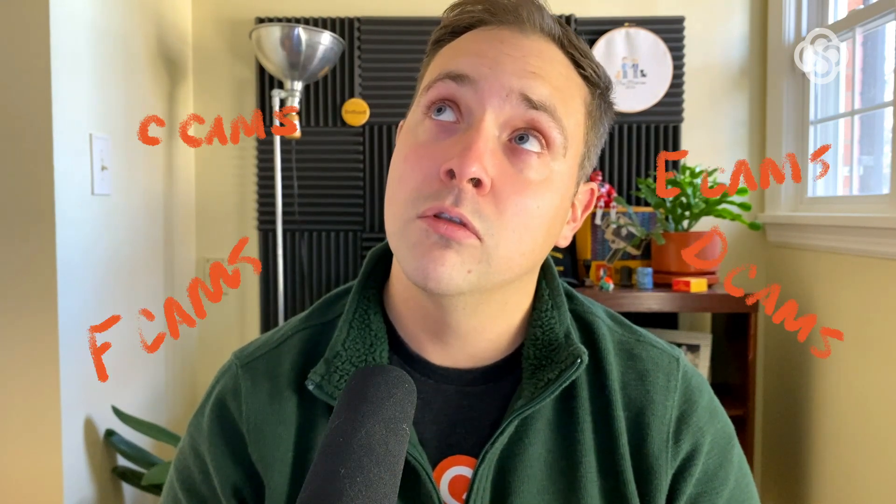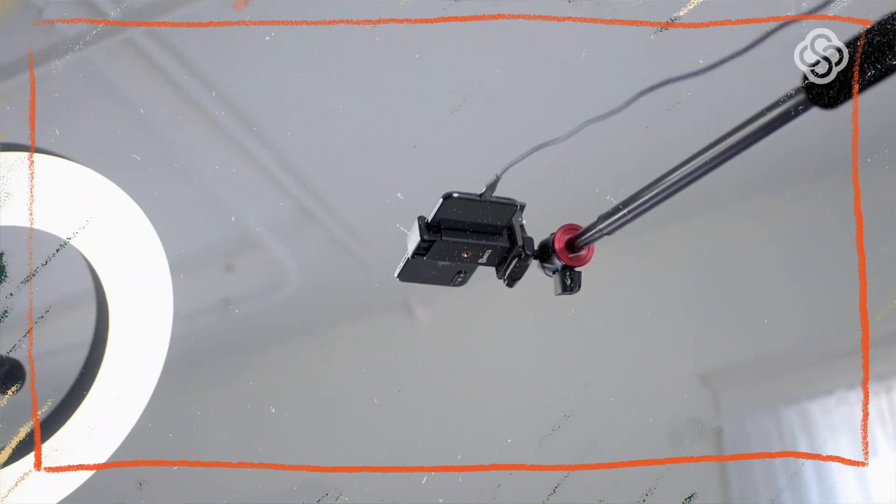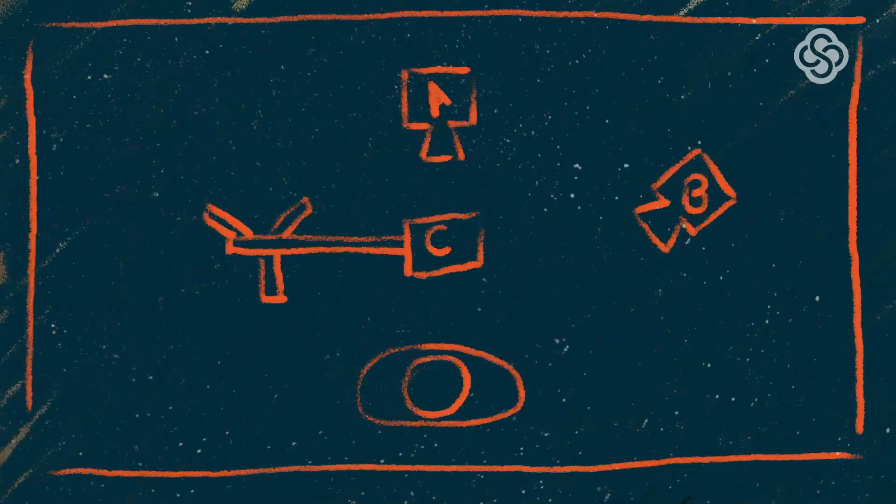So we have A cams, we have B cams — it makes sense that we'd have C cams, D cams, E cams, F cams, G cams — you get it. If I were going to do a live stream of, say, me doing a live illustration or I want to show off something in my hands, I could set up a C cam. Using a stand, I could put it up above me and shoot down, showing what I'm working on, showing all my illustrations.